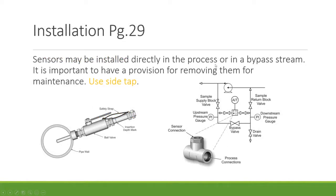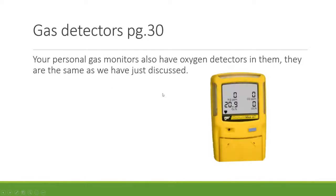For installation, sensors can be installed directly in the process or in a bypass stream — it's important to have a provision for removing them for maintenance. Use a side tap at the center third of the pipe ideally. A bypass fast-loop mechanism uses a differential pressure-generating device such as a pump, orifice, or valve to create high and low pressure, driving flow through the smaller side loop.